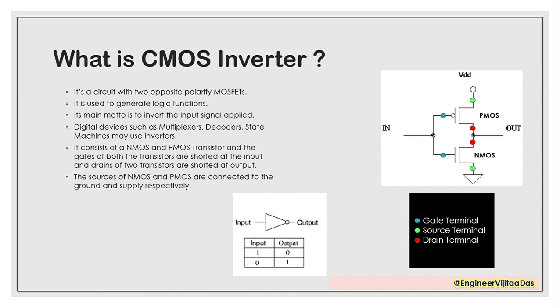This CMOS inverter can be used in many digital devices such as multiplexers, decoders, and state machines, and also in many analog devices like op-amps.